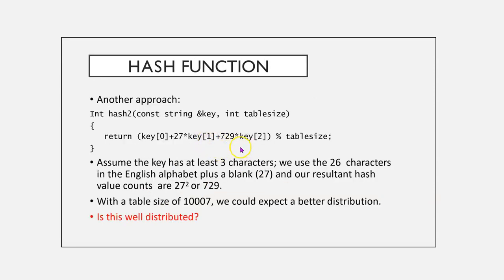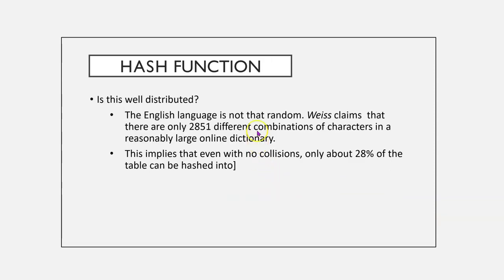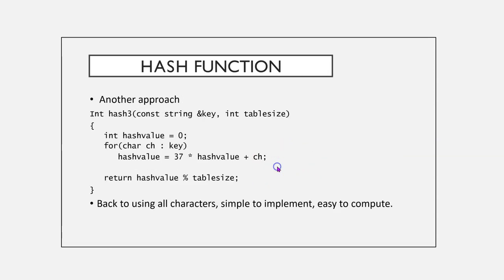Another approach is we could take the first three characters, multiply them by some random number, and add them together. And if the key has at least three characters, and we can use the 26 characters in the English alphabet, our resultant hash value counts are 729. With a table of 10,007, we could expect a better distribution. Is this well distributed? Well, the English language isn't that random. So, even with no collisions, only about 28% of the table can be directly hashed into. So, it's not perfect.